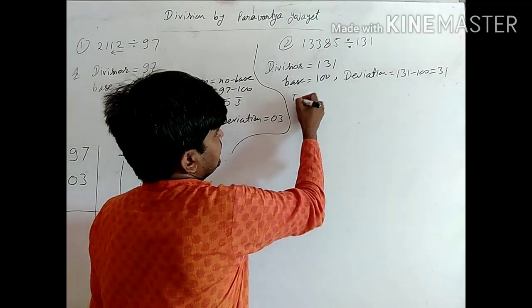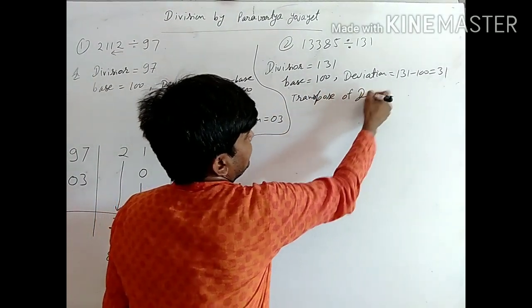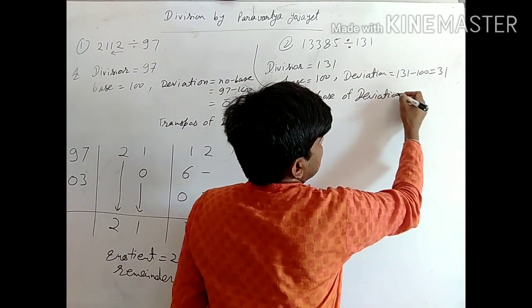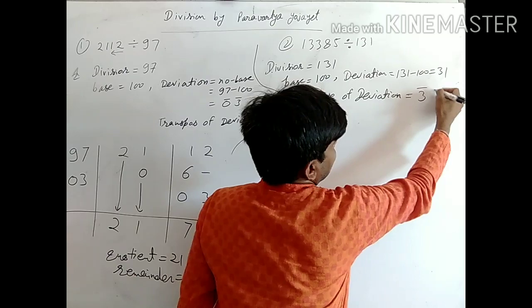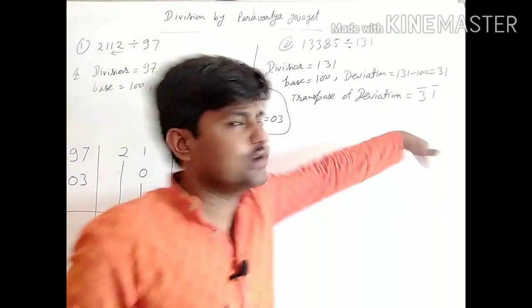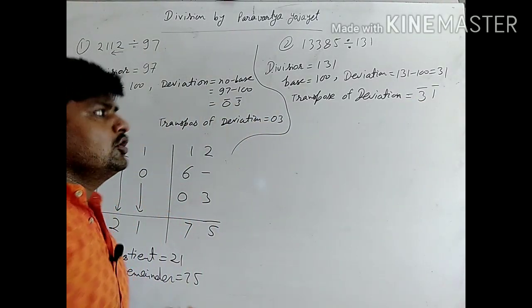Now transpose of deviation. See, it's a positive number. So we convert it to vinculum. You can say that we don't need to convert to vinculum, whatever comes, we write it negative. So we'll write negative, then 3 bar and 1 bar.